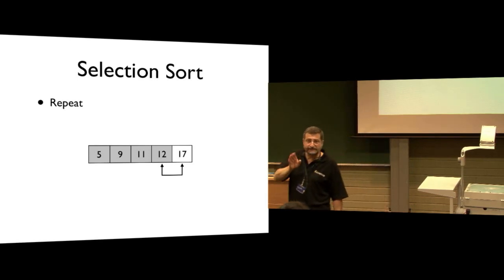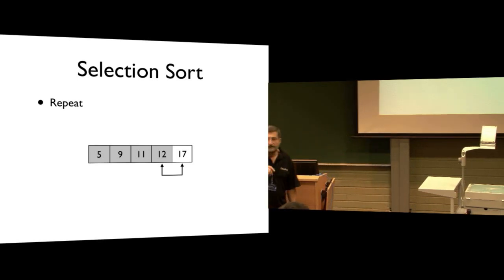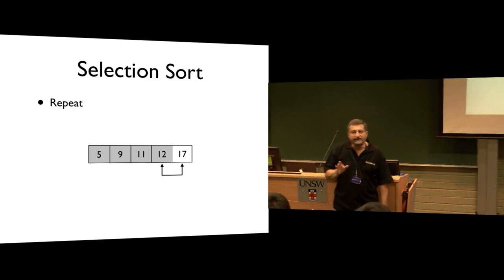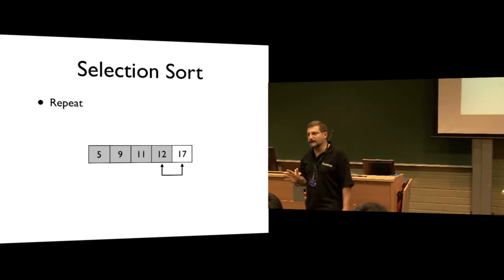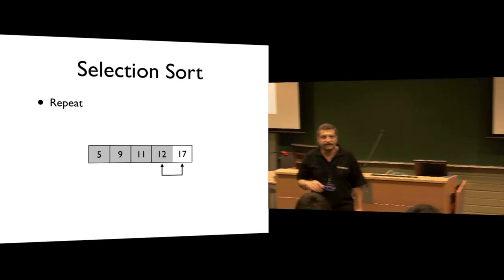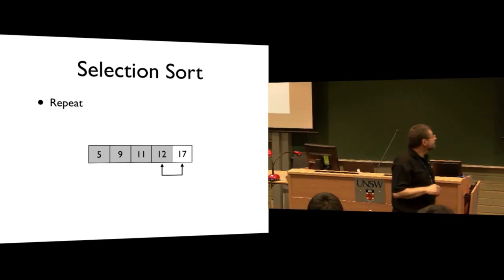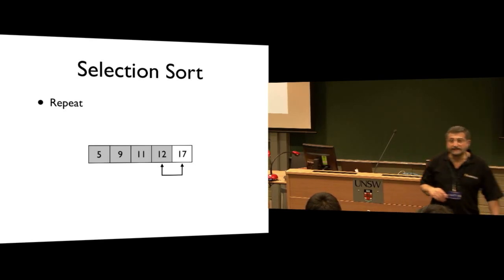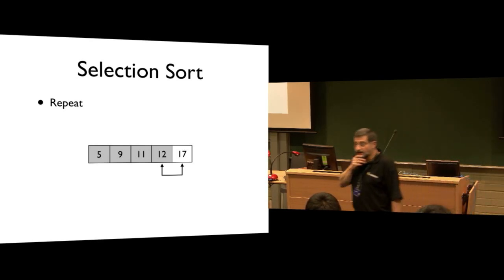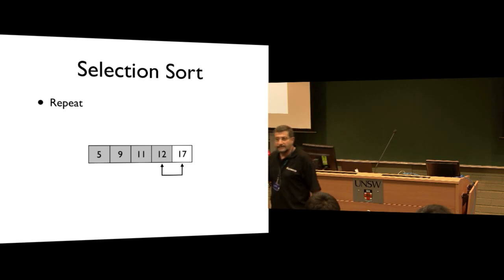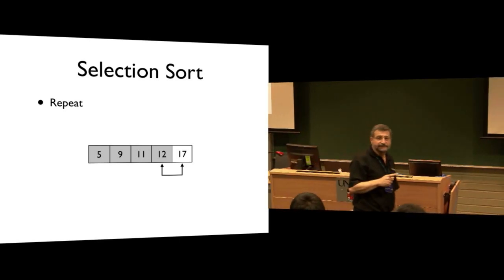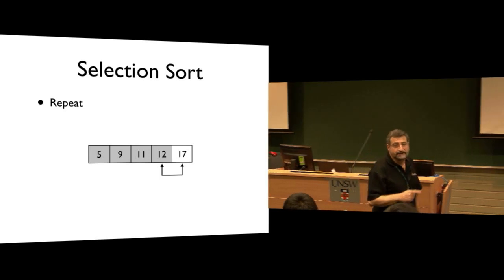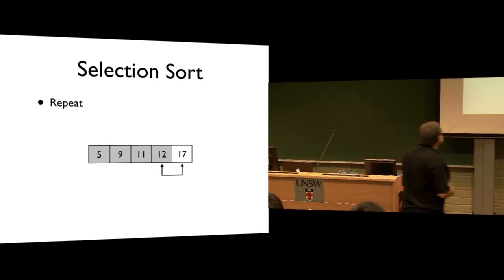Any questions with just the basic method? This is not the fastest way — there are all sorts of different sorting algorithms that behave more quickly than this one. But this is simple enough, and it uses an algorithm you wrote in the tutorial last week: finding the smallest element in an array.